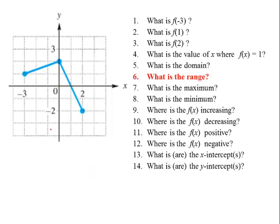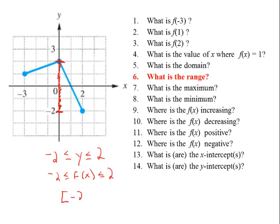What is the range? The range is the possible y values. We see the smallest y is here and the largest y is here. We start with the smallest, negative 2 — it's a solid circle so y can equal negative 2 — and the maximum is positive 2. The range is from negative 2 to positive 2. In set notation: bracket negative 2 comma positive 2 bracket.